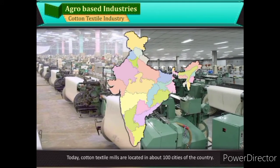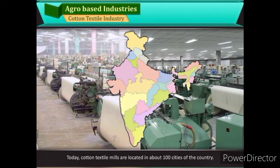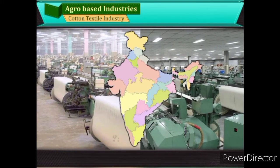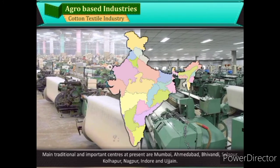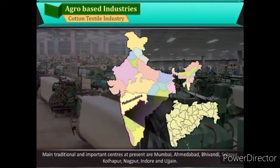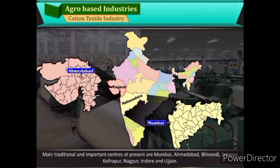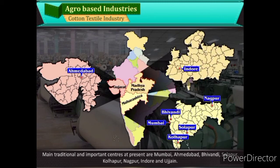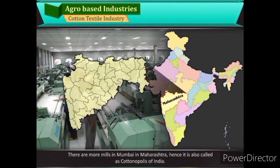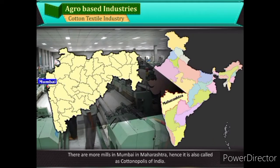Main traditional and important centres at present are Mumbai, Ahmedabad, Bhivandi, Sholapur, Kolhapur, Nagpur, Indore, and Ujjain. There are more mills in Mumbai in Maharashtra; hence, it is also called the Cottonopolis of India.